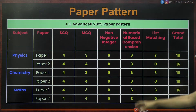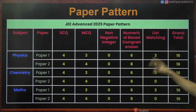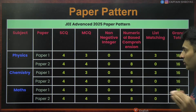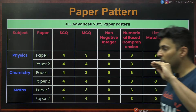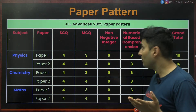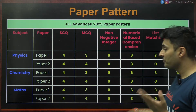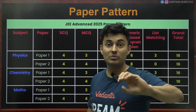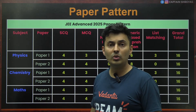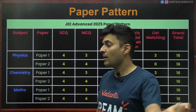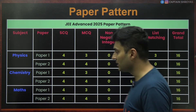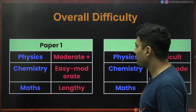Negative marks will definitely play a spoilsport if you get it wrong — even in match the following, there was negative marking. So you cannot afford to make mistakes. Matrix type was absent, which was one interesting thing.